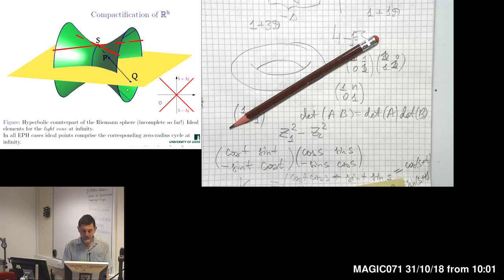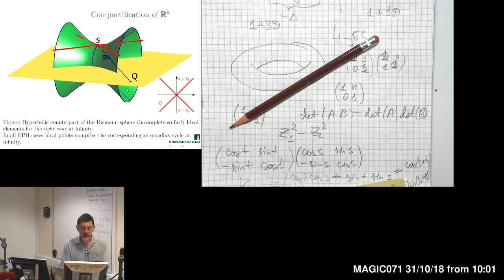All the elements which we added together in each respective case form a so-called zero radius cycle at infinity. Actually, zero divisors together form a zero radius cycle centered at the origin of our algebra. Making a division by such an element, we need to add a corresponding zero radius cycle centered at infinity. That was the content of the previous lectures.